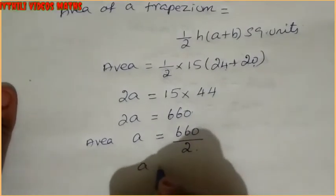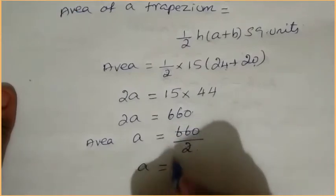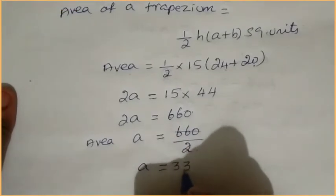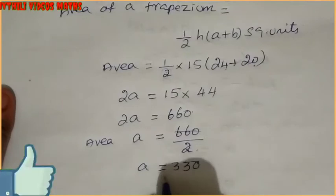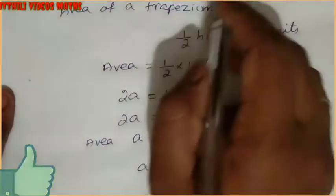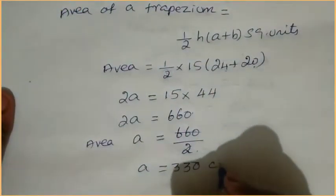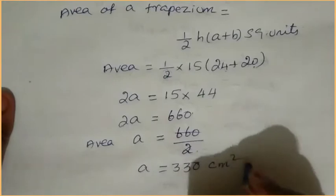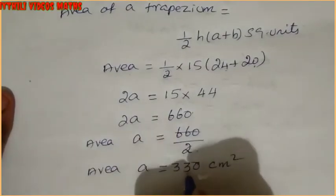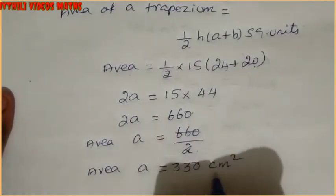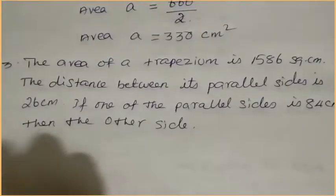2A equals 660. When we take the 2 to the right-hand side, it becomes division. So A equals 660 divided by 2. Cancel: 2s go into 6 three times — that is 330. So A equals 330.